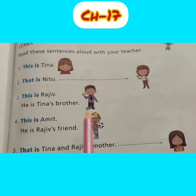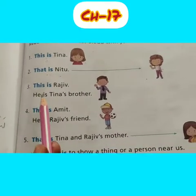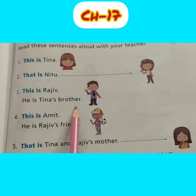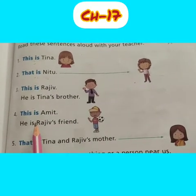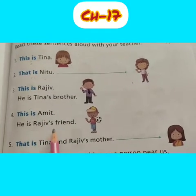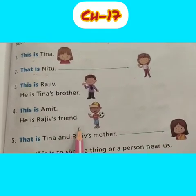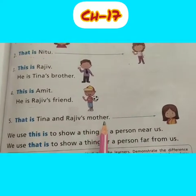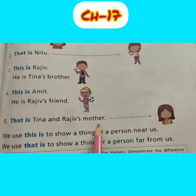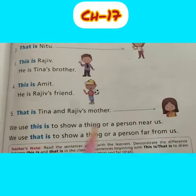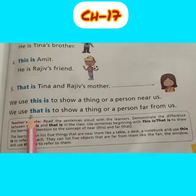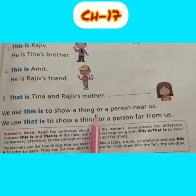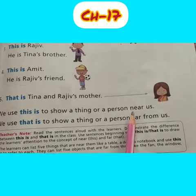This is already read in the previous class also. This is Rajiv — he is Tina's brother. And this is Amit — he is Rajiv's friend. That is Tina and Rajiv's mother. So you see here we use 'this is' to show a thing or person near us.